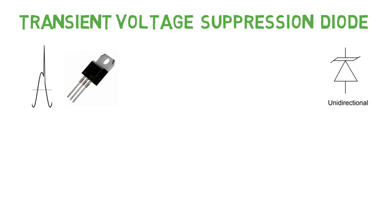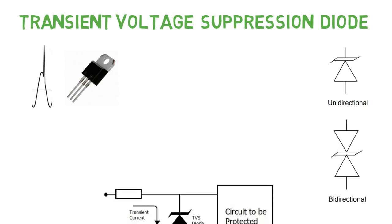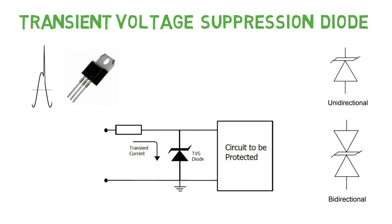This is the symbol of unidirectional TVS diode and this is the bidirectional TVS diode. In fact, TVS diodes are connected in the circuit like this. It absorbs the transient current.